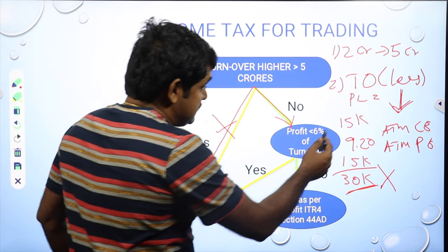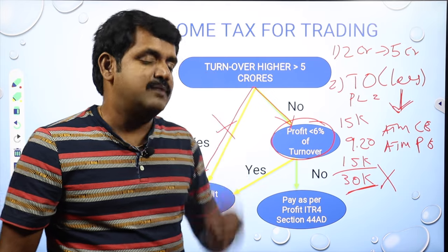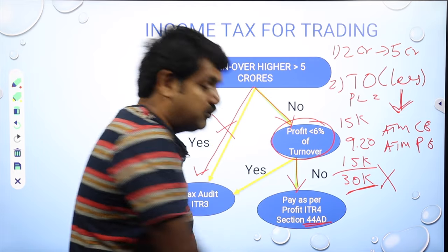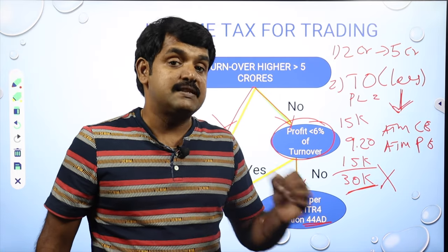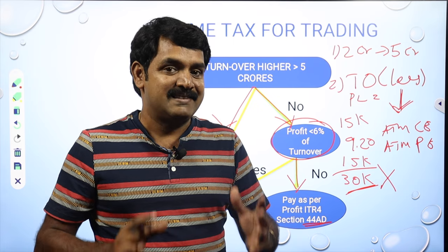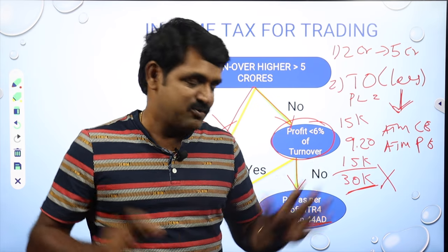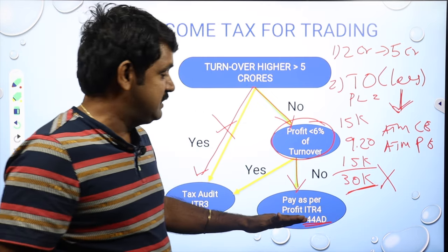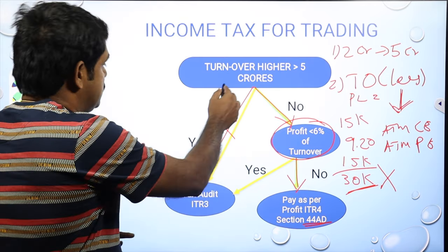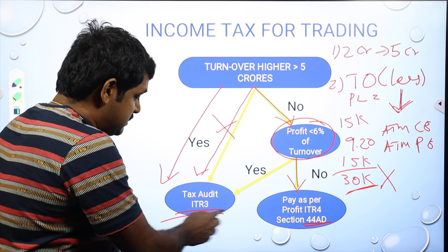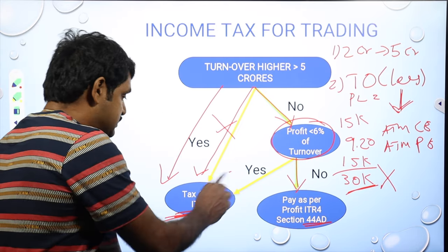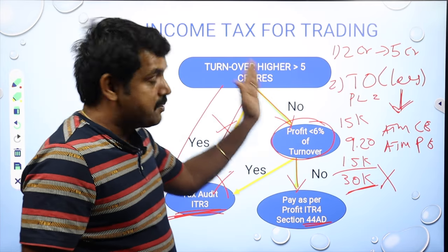Since your turnover is now lower and the threshold has increased from two crores to five crores, most retail traders will always fall below five crores. Previously there was a chance you'd breach the limit; now you won't unless you're doing huge volume. If you are a profitable trader making more than six percent, you can use Section 44AD — declare only six percent of your turnover as profit, and the rest is assumed as expenses. Previously, most traders were forced into CA auditing due to the old calculation; now that is no longer required.